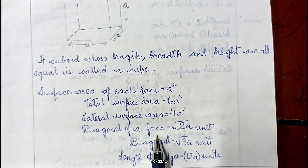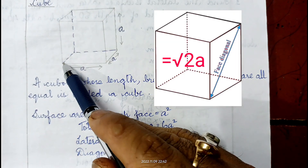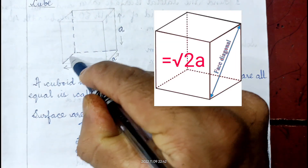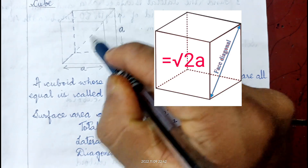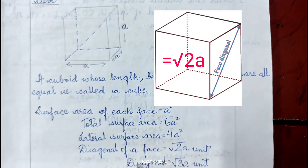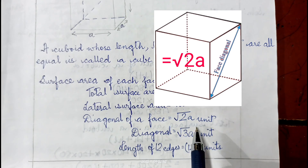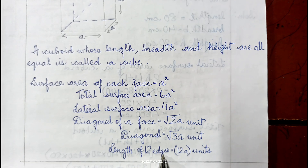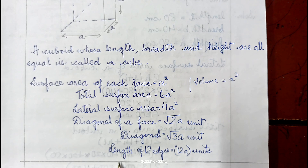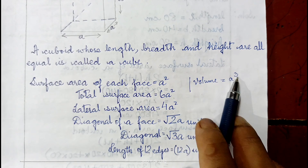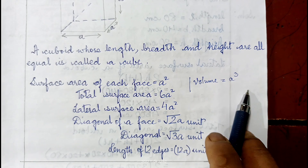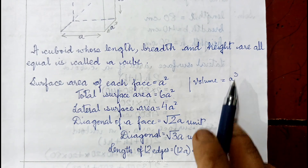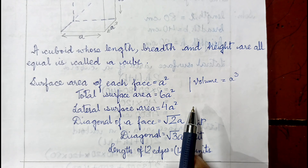The diagonal of a face of a cube = A√2. The length of the main diagonal (space diagonal) = A√3. Since all 12 edges are equal, the total length of all edges = 12A. Volume of the cube = A³. Based on these formulas, we can start the sums of exercise 13A.